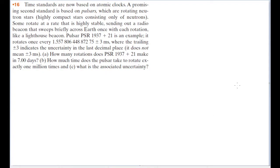Time standards are now based on atomic clocks. A promising second standard is based on pulsars, which are rotating neutron stars, highly compact stars consisting only of neutrons. Some rotate at a rate that is highly stable, sending out a radio beacon that sweeps briefly across Earth once with each rotation, like a lighthouse beacon.